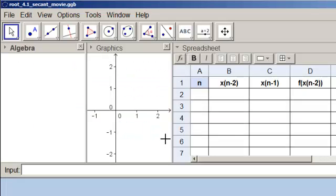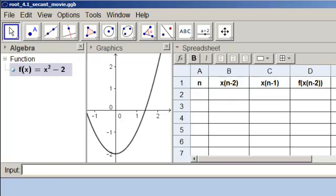Here we are in GeoGebra. I actually have the table set up for using the secant method. But the first thing we're going to do is input our function. We come down to the input bar and start typing f of x equals x squared minus 2. Even though we're solving the equation, we input f of x as a function. Hit enter. There it is, our parabola.